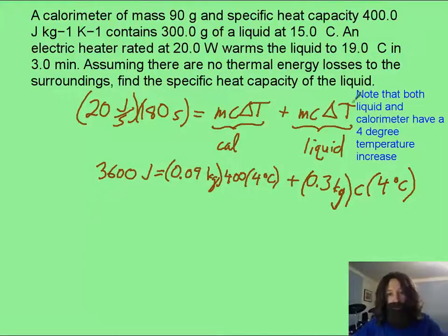Now, as I fill in some more numbers, take note that it says that the liquid warms up to 19 degrees Celsius. That must also mean that the calorimeter also raises to the same temperature. So that's how I end up having a 4 degree delta T for both of those substances. Hopefully, you've got this far. Continue filling in and solve for this specific heat capacity of the liquid.